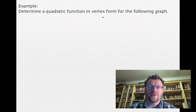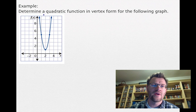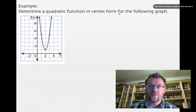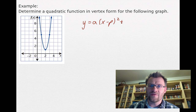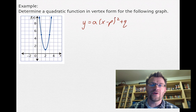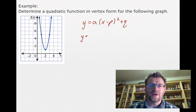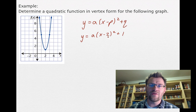Our next examples deal with questions using the quadratic function in vertex form. The first one says: determine a quadratic function in vertex form for the following graph. We have the vertex form y equals a times x minus p squared plus q. From the graph we can read the vertex directly and plug it in for p and q. Our vertex here is (2, 1), so we get y equals a times x minus 2 squared plus 1.